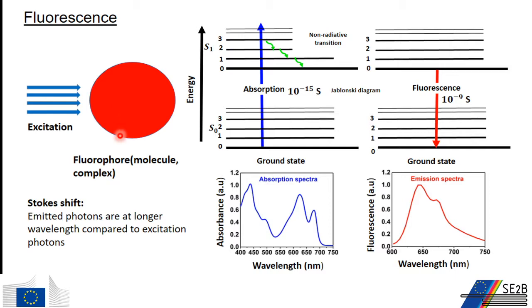When a fluorophore or complex of fluorophores absorbs light of appropriate energy, it reaches the excited state. A molecule in the excited state can relax via several competing non-radiative and radiative pathways. Fluorescence is a radiative relaxation pathway in which an excited state molecule relaxes to the ground state and emits photons of lower energy than the absorbed photons. This shift in energy of the absorbed and emitted photons is known as Stokes' shift.